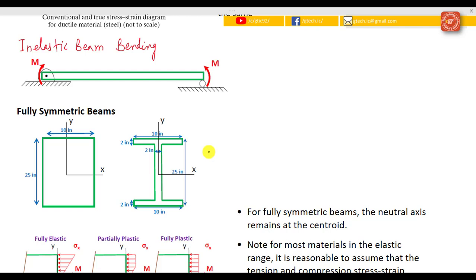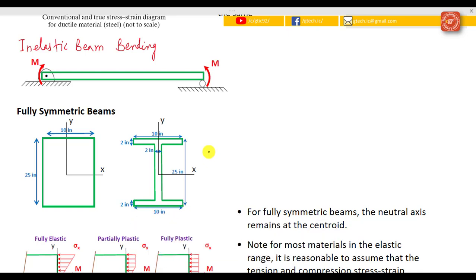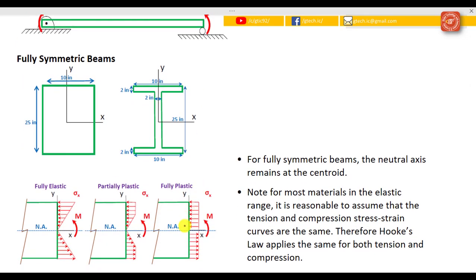As we continue to put a moment on the beam we eventually get a point where the outer fiber starts yielding and we move into the plastic region as shown here. I have an elastic portion of the cross section and then I go to the plastic, and it's symmetric about the neutral axis with equal moment and equal distance above and below the neutral axis.